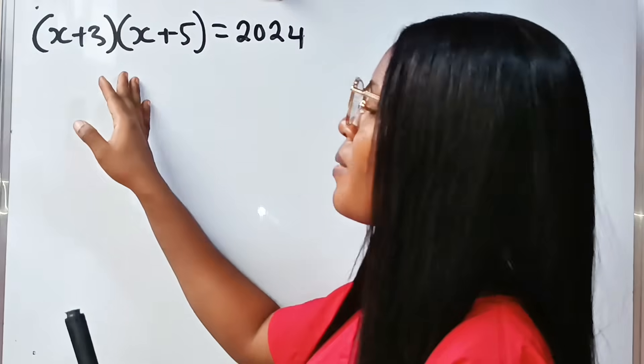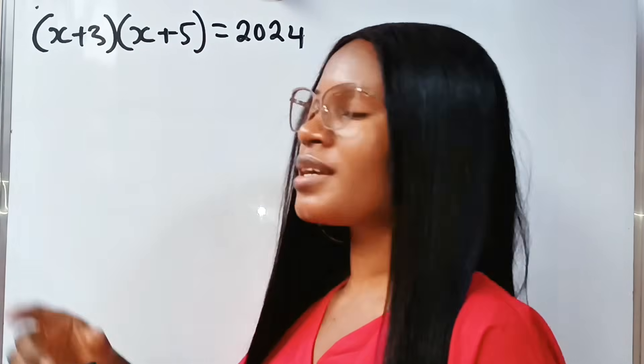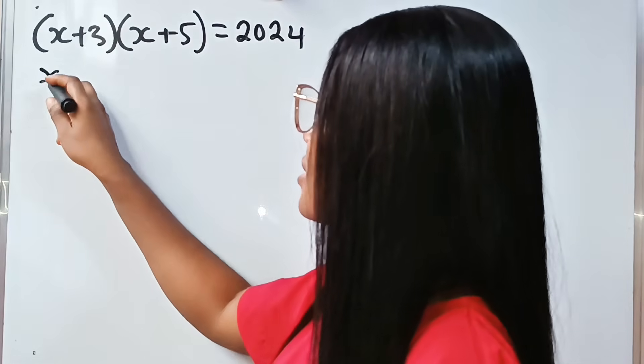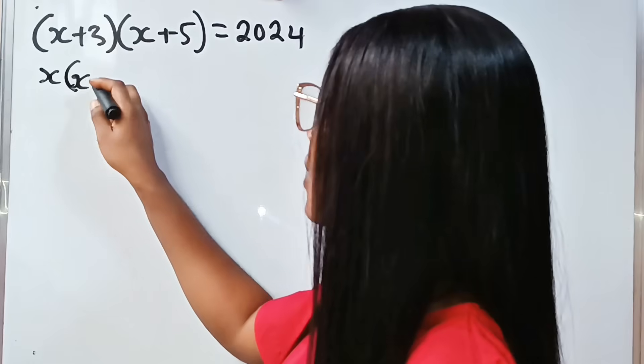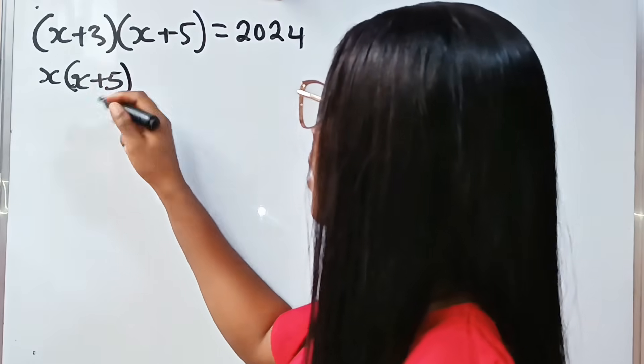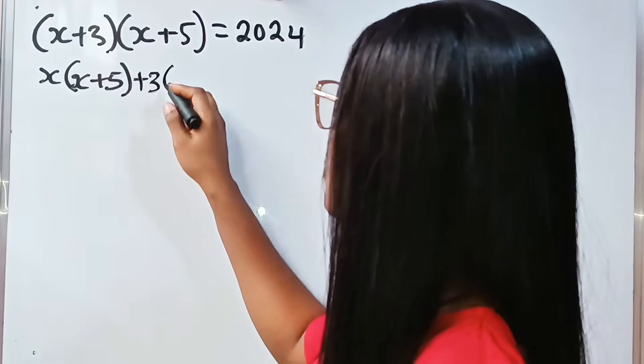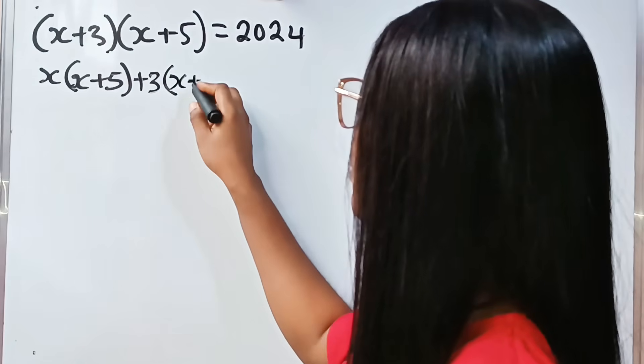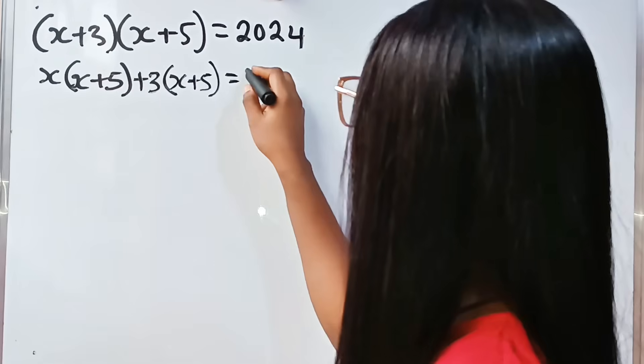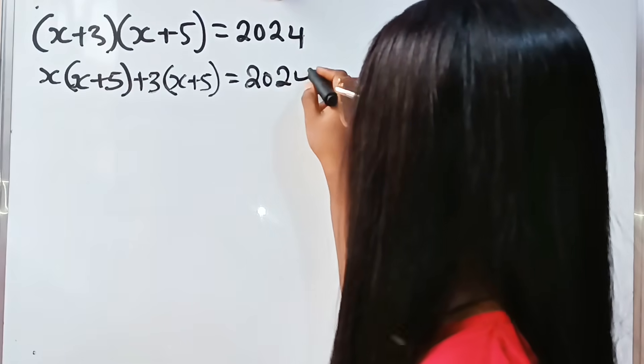To open this bracket is the same thing as x(x + 5) + 3(x + 5). Now this is equal to 2024.